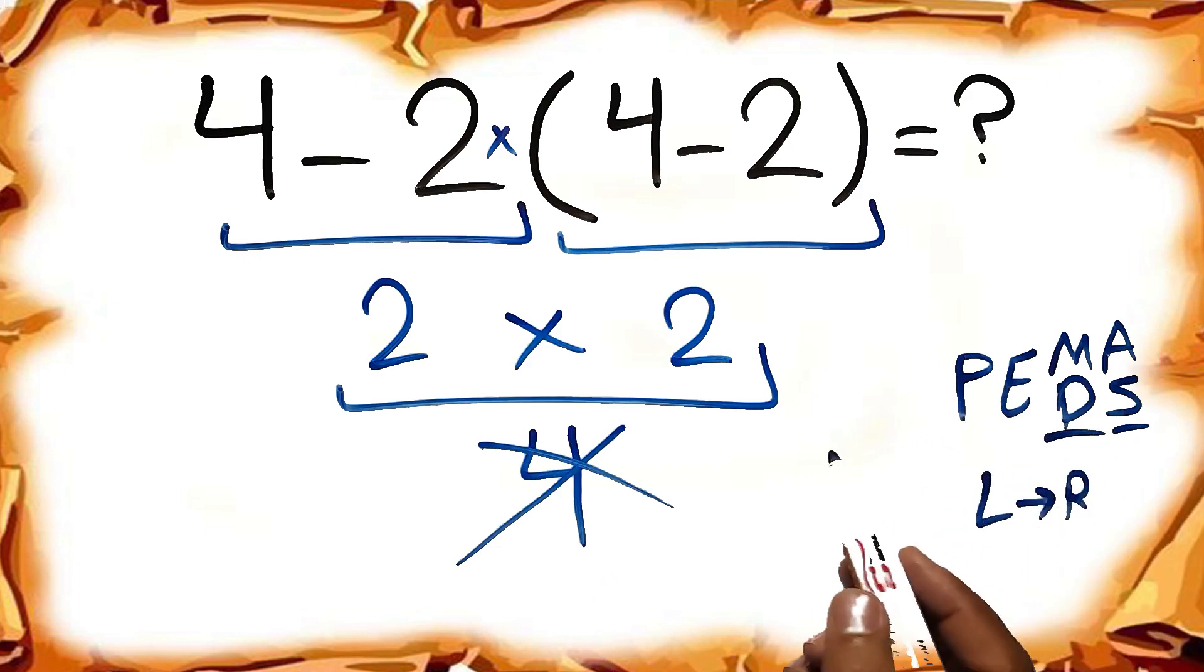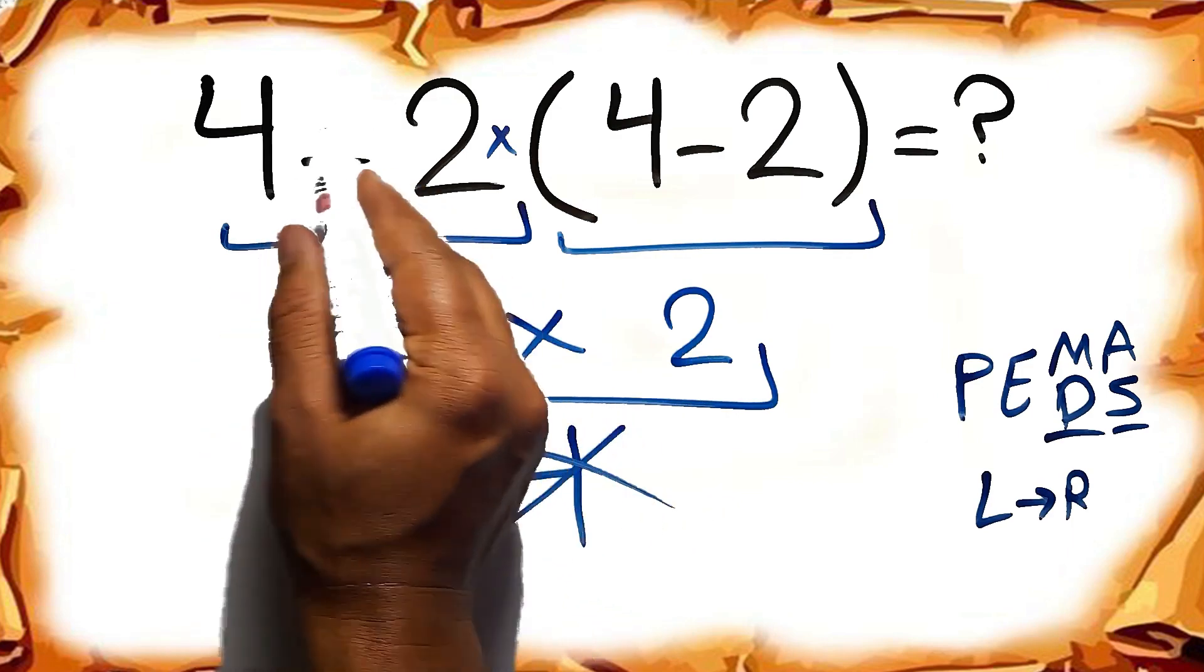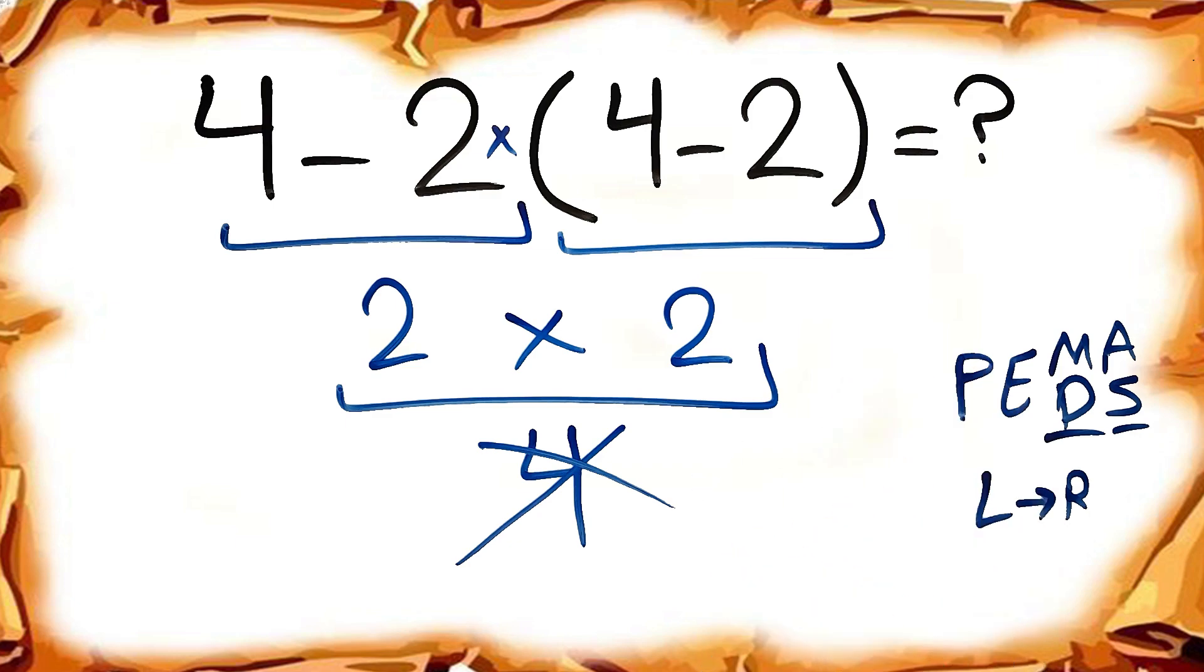So according to the PEMDAS, first we have to do this parenthesis, then this multiplication, and finally this subtraction. If we do this subtraction before this multiplication or this parenthesis, it is wrong.